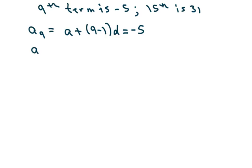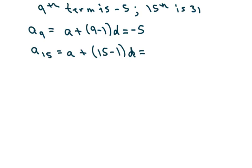And a sub 15, our 15th term — I should have written 'term' there — a sub 1 plus 15 minus 1 times d, and that equals 31.